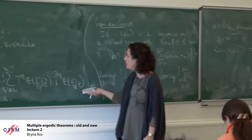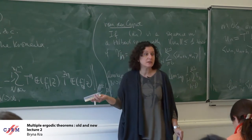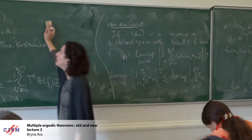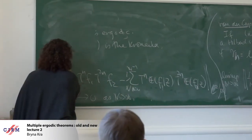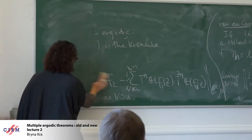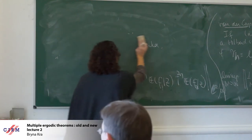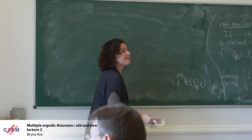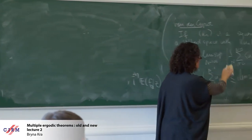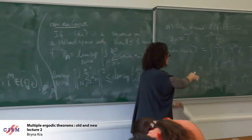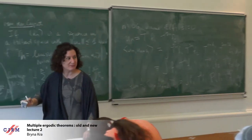You might naively hope that you can just keep projecting down to the Kronecker factor and that this will help, but unfortunately the Kronecker factor doesn't capture the behavior as soon as you go to more terms. Van der Corput and this trick will come up every time, but it'll become more complicated. Let me give you an example why.